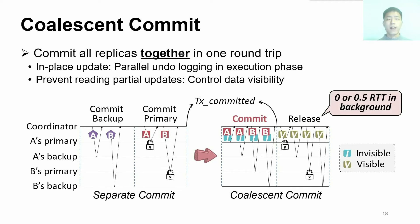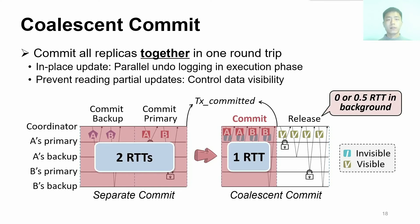This release phase consumes 0 or 0.5 RTT in the background, because if other coordinators currently do not read the invisible data, the release phase can be fully hidden. Otherwise, other coordinators only wait for half an RTT after the data are visible. Therefore, prior systems consume two RTTs for separate commit, while FORD only uses one RTT to commit replicas together.